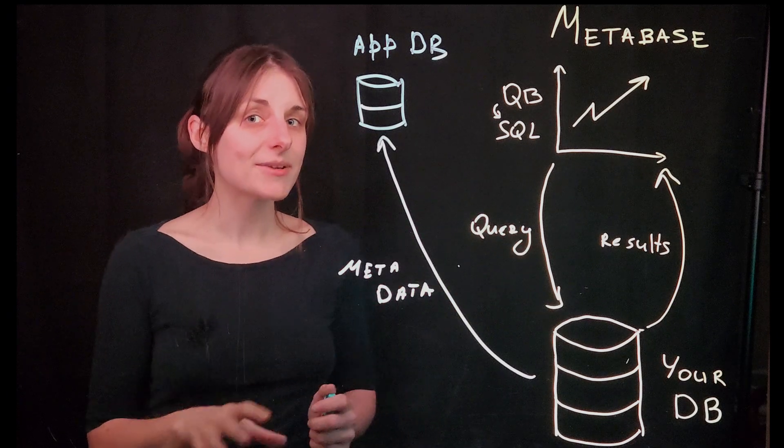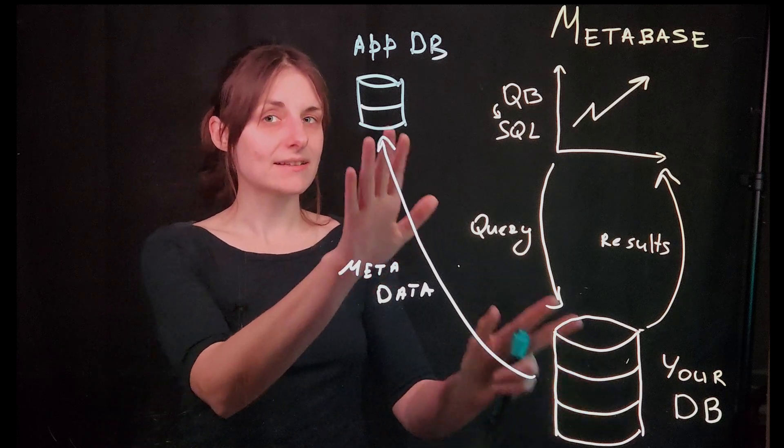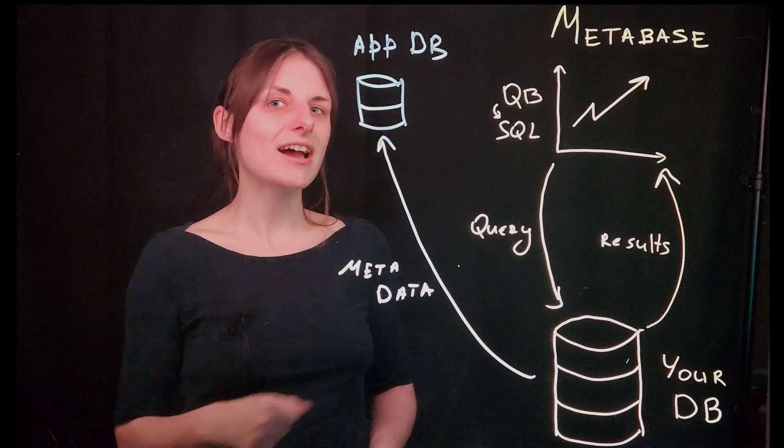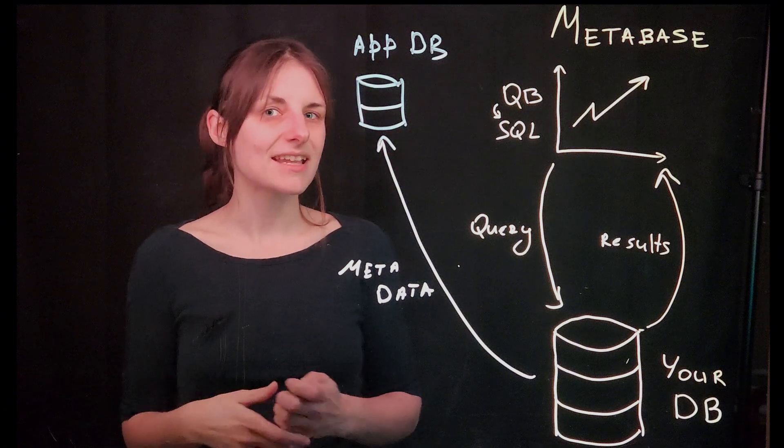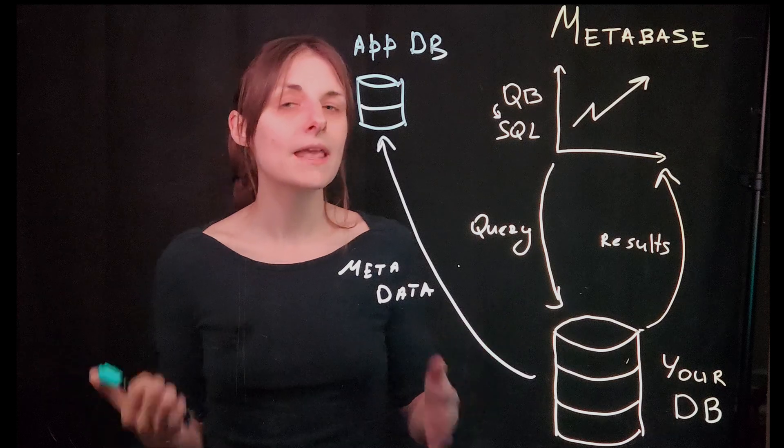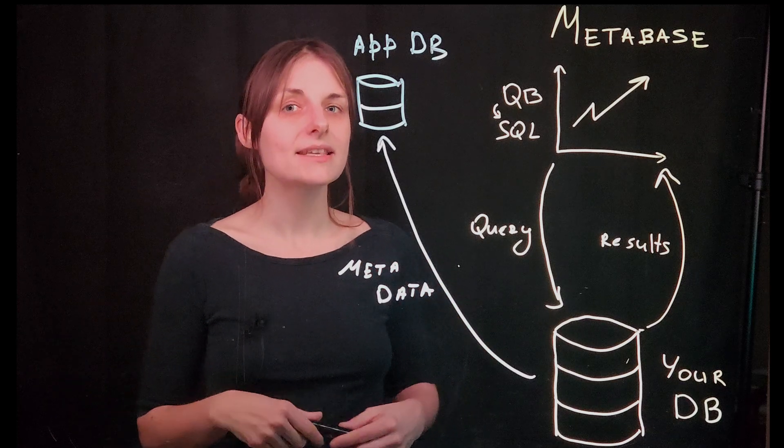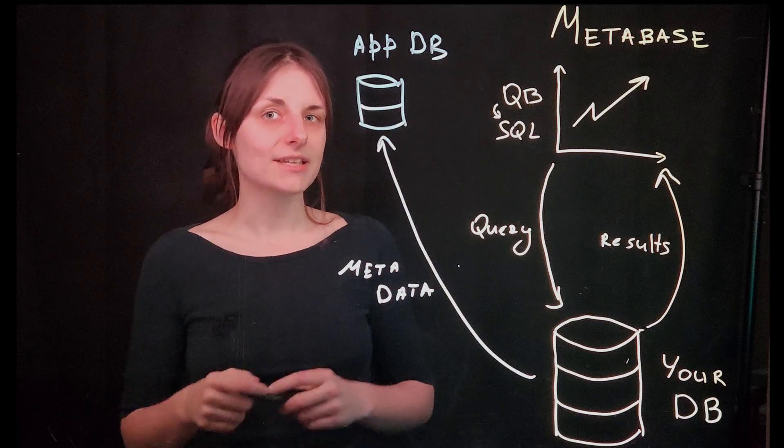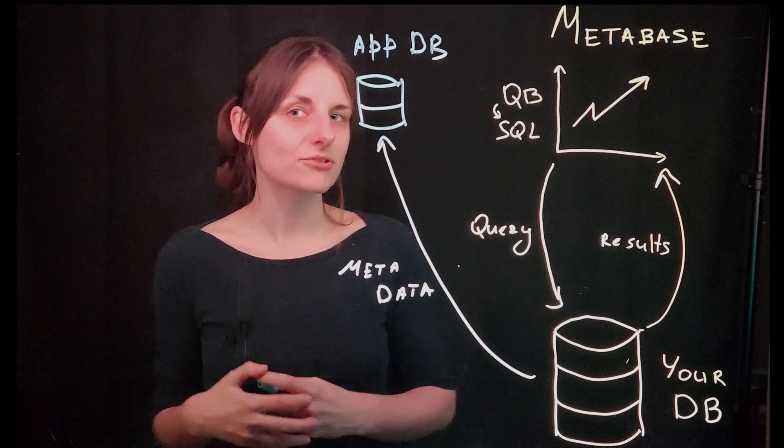Application Database is separate from the database where your data lives. If you're on a Metabase Cloud plan, you never have to worry about Application Database. That's something that we handle for you. But if you're self-hosting Metabase, you need to provision a separate database to serve as Metabase Application Database, preferably a Postgres database.